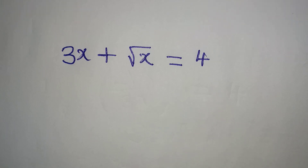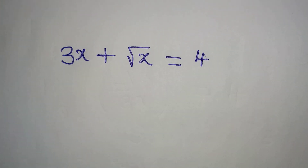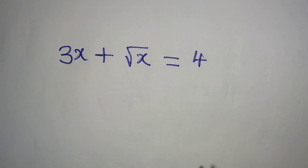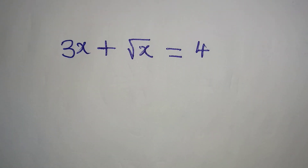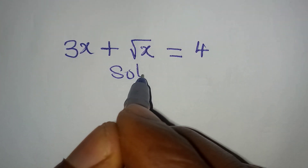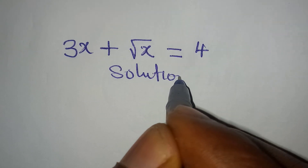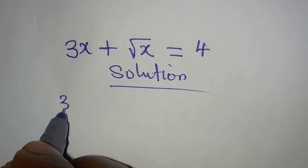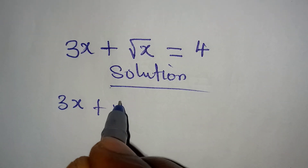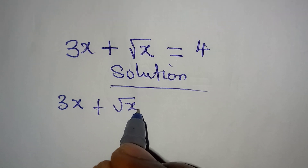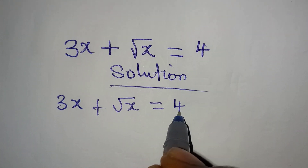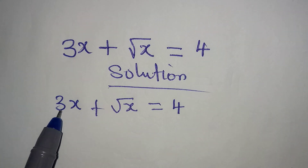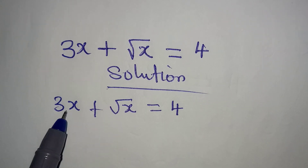Hello everyone, let us deal with this problem very quickly. We are looking for the value of x. We have 3x plus square root of x equal to 4.